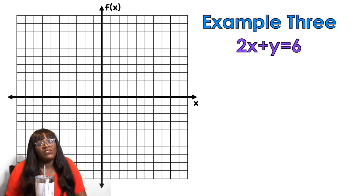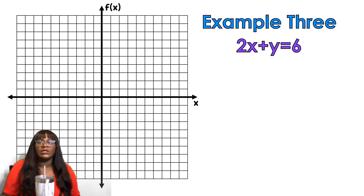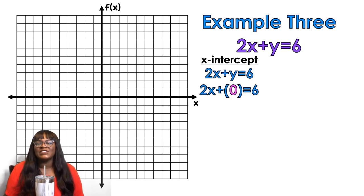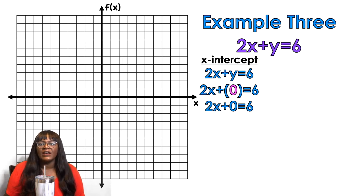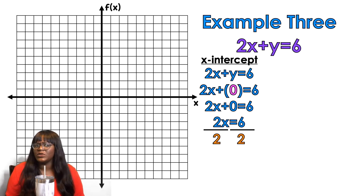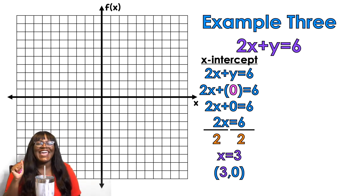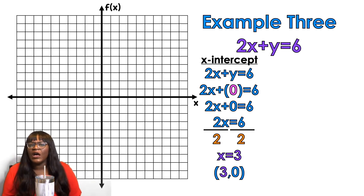Example number three — I hope you're getting the hang of it because I'm going to want you to do some on your own. For the x-intercept, what do you do? You plug in 0 for y. When I plug in 0 for y I get 2x plus 0, which is just 2x. Divide by 2 on both sides — x equals 3. So my coordinate is (3, 0).